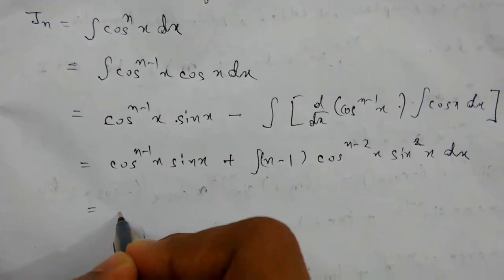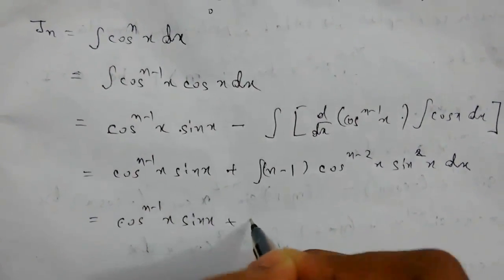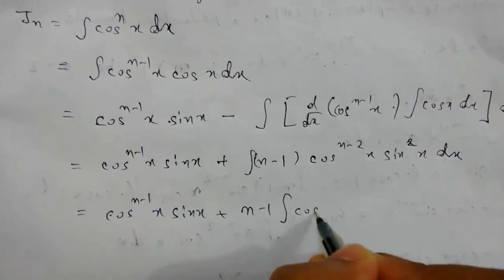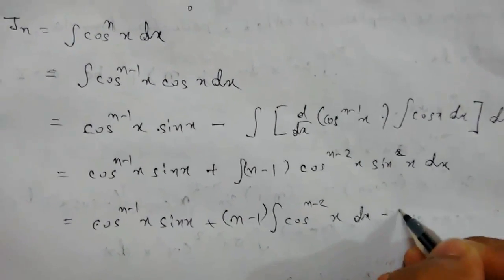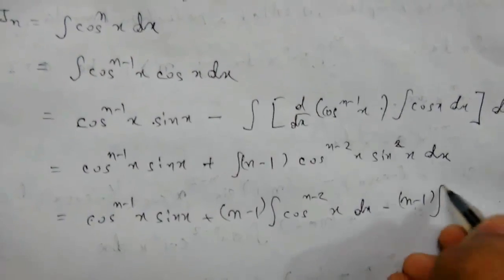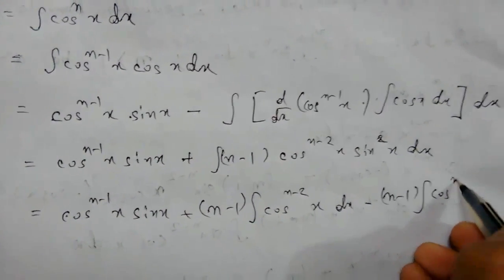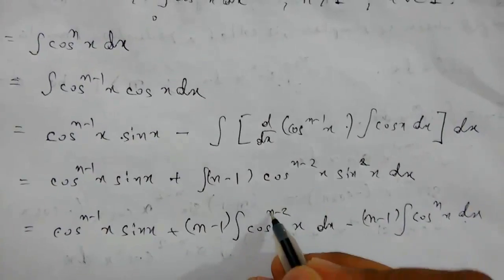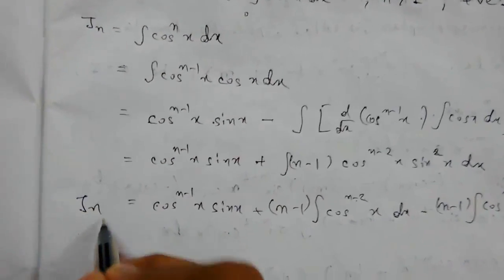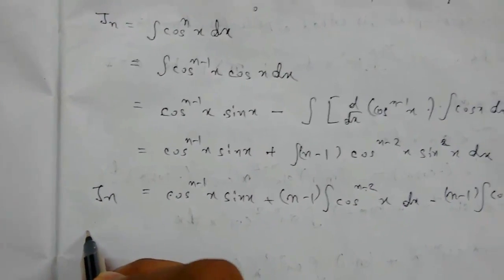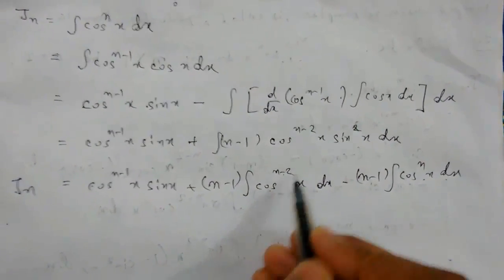Now we have cos^(n-1)(x)·sin(x) plus (n-1) times the integral of cos^(n-2)(x) dx, minus (n-1) times the integral of cos^n(x) dx. We reduced sin²(x) to 1 minus cos²(x). The cos^n(x) term gives us Jn. So we now have Jn and J(n-2).